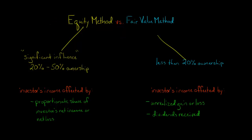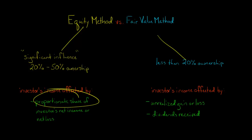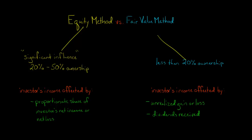With the equity method, neither of those two things matter. Unrealized gains are not going to affect the investor's income, and dividends received are not going to be income. What does affect the investor's income is that the investor will take a proportionate share of the investee's net income or net loss and recognize it. For example, if the investee had $100,000 in net income and they own 30%, they would take 30% of that $100,000 and recognize it as investment revenue.